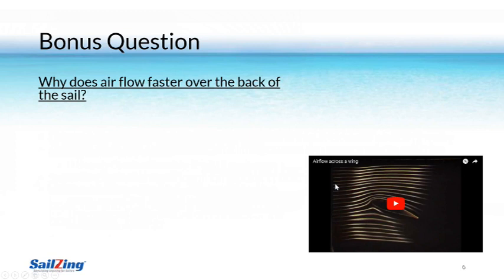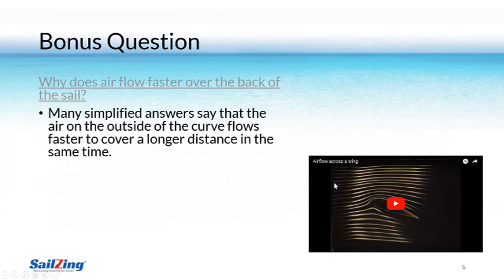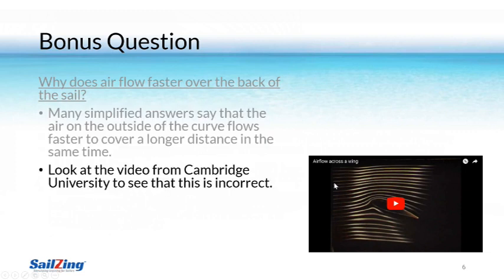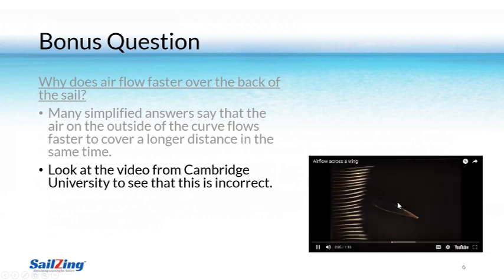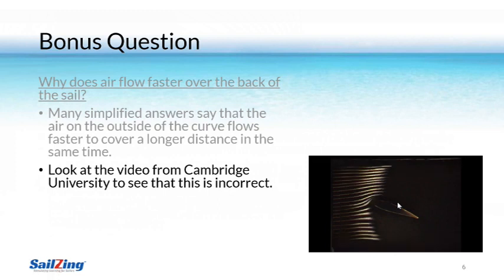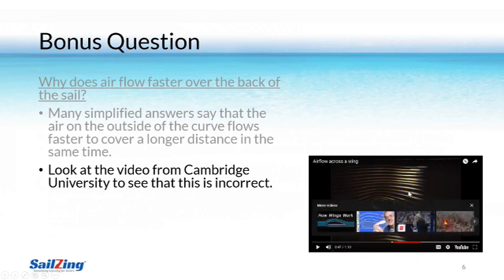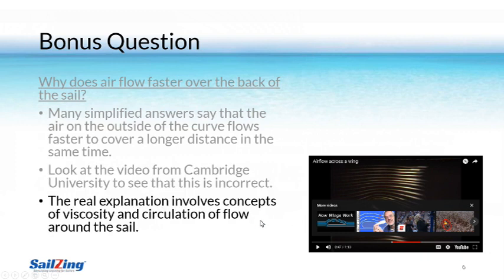We don't really need to understand this to be better sailors, but here's a bonus question: why does the air flow faster over the back of the sail? Many simplified answers say that the air on the outside of the curve flows faster to cover a longer distance in the same time. Let's look at a video from Cambridge University to see what actually happens. In this slow motion video of air flowing across a wing, you can see that the simplified explanation is not correct. The correct explanation involves concepts of viscosity and circulation of flow around the sail — pretty complex stuff and not worth covering here.